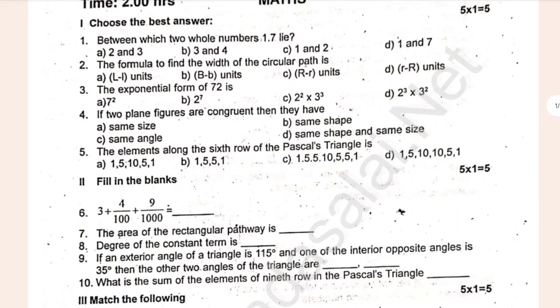Choose the best answer. Fill in the blanks. Let's check the blanks. 1.7 lie. The formula to find the width of the circular path is dash.